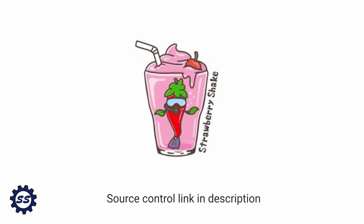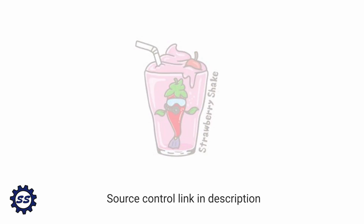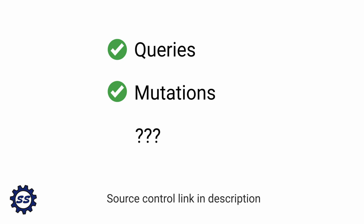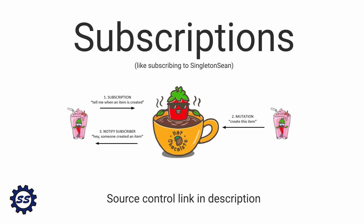Currently, our client application makes GraphQL queries and mutations against our GraphQL server. But queries and mutations are only two out of the three main operations with GraphQL. The last operation we haven't covered yet is subscriptions. Our GraphQL client is going to execute a GraphQL subscription for an event against our GraphQL server.